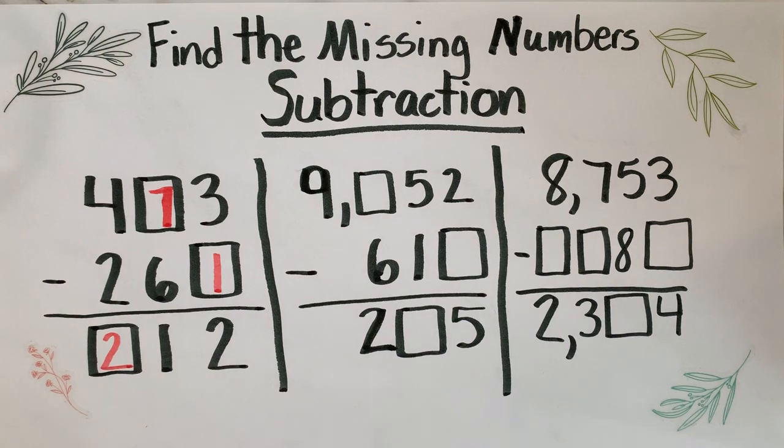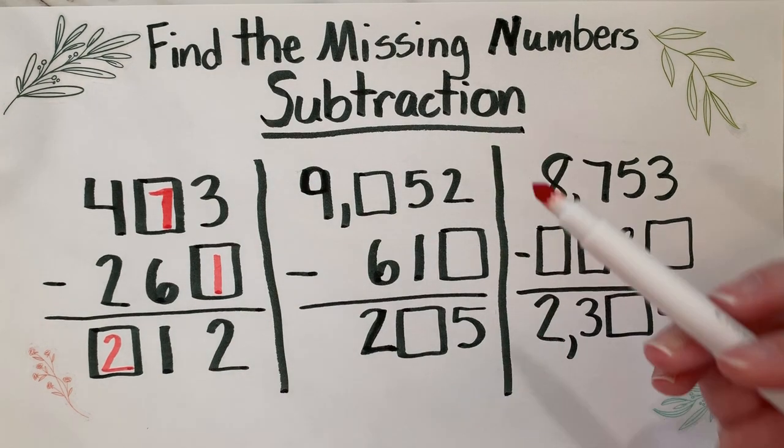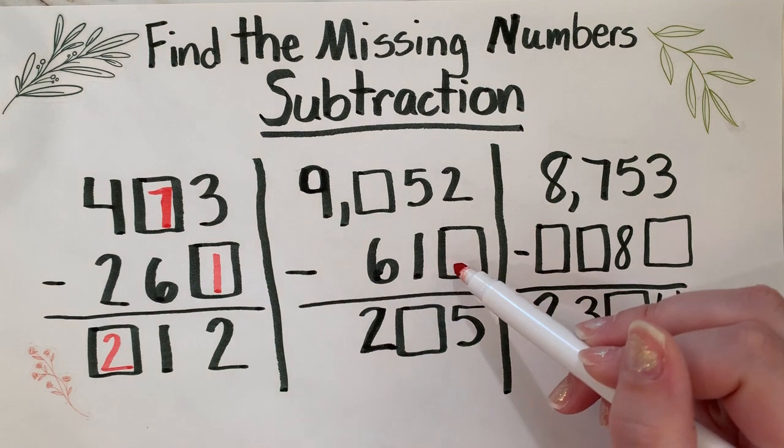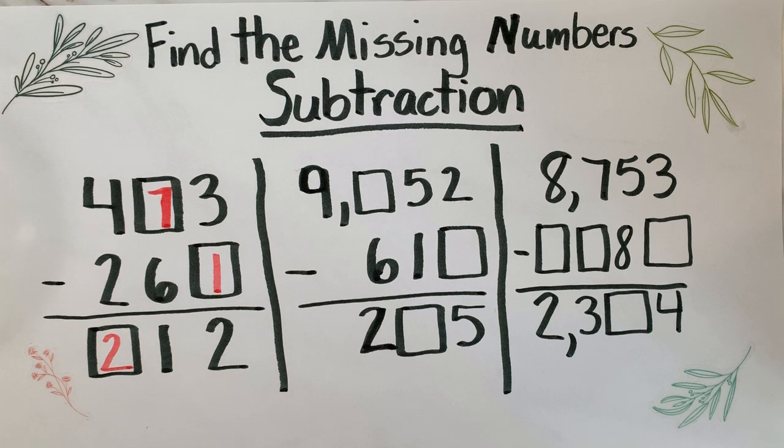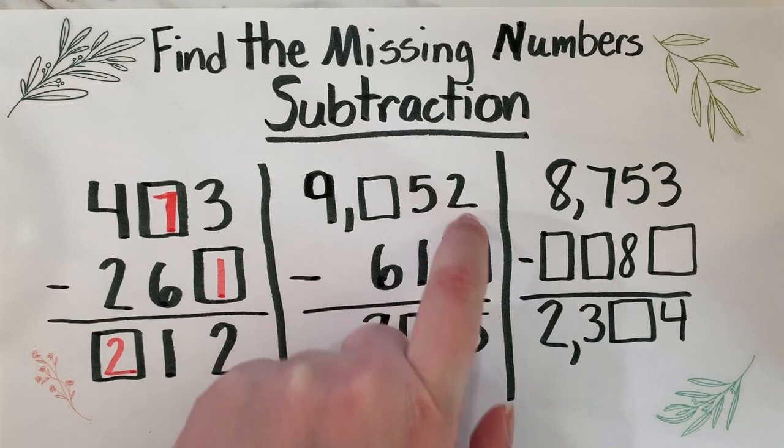All right, let's begin. So two minus something equals five. Now if you've ever had two oranges - two oranges - and you took some away, I don't think you'd ever get five oranges. So there's something wacky going on here. What do you think is going on? What special property does subtraction have that I could get a larger number here than what I'm starting with up there?